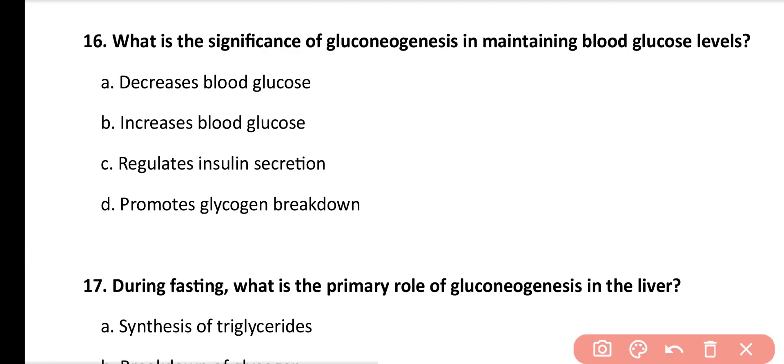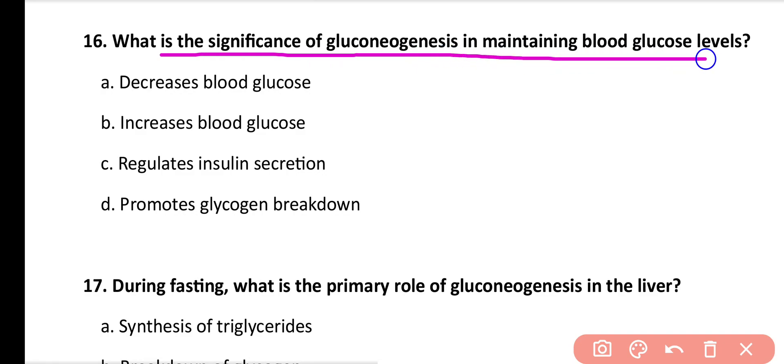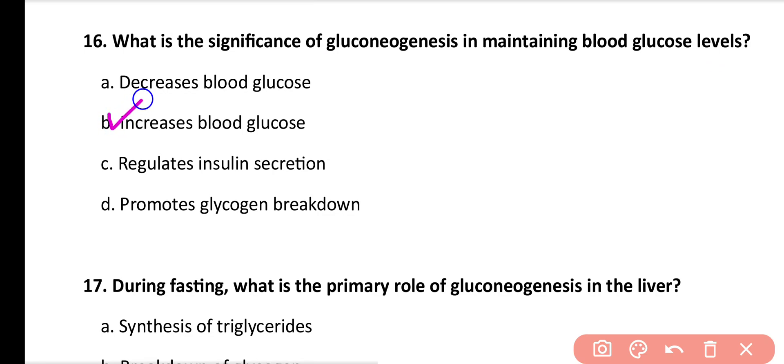Question number 16: What is the significance of gluconeogenesis in maintaining blood glucose levels? Options: decreases blood glucose, increases blood glucose, regulates insulin secretion, promotes glycogen breakdown. Correct answer is option B. Gluconeogenesis causes blood glucose levels to increase.